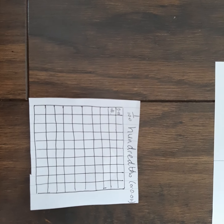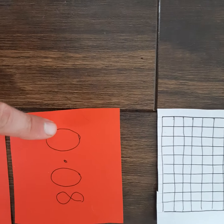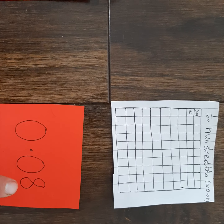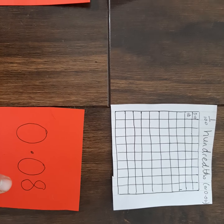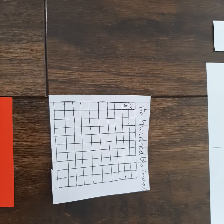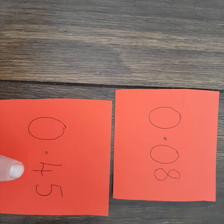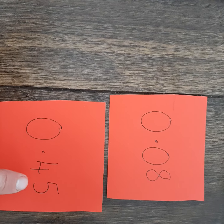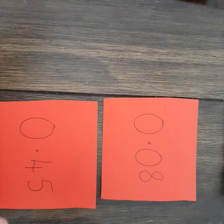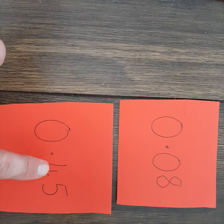So if I'm dealing with hundredths, I should always have two numbers after the decimal point, even if one of those numbers is 0. If I have eight of these squares, I'd represent that as: I have no units, no tenths, but I have eight hundredths — so 0.08. What if I had a bigger amount, like 45 of these hundredths? I have zero units, then my decimal point, and now I have 45 hundredths. Sometimes people get confused and start the 45 in the second column, giving three numbers after the decimal point. When you're dealing with hundredths, you only have two numbers after the decimal point — so it's 0.45.